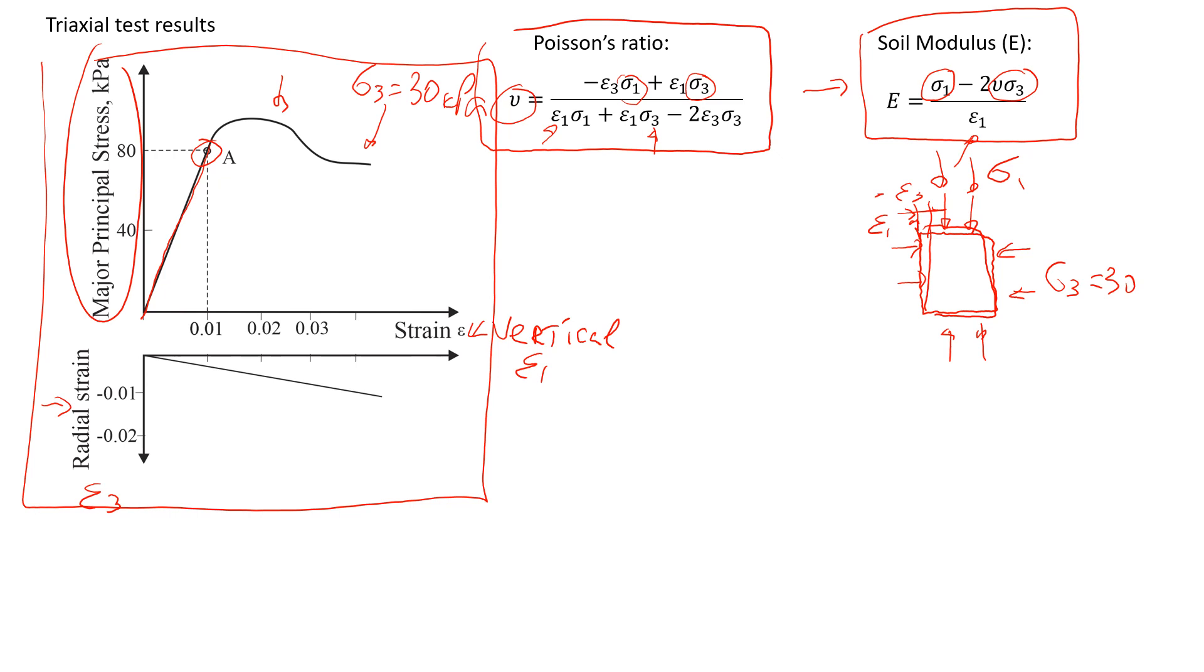What we're going to get from this curve are values of sigma1 and sigma3. Sigma1 is 80 kPa. Sigma3, we already know we set it up before we applied sigma1, is 30 kPa. Now let's estimate what the strains will be when we reach point A.